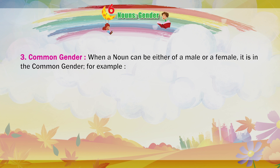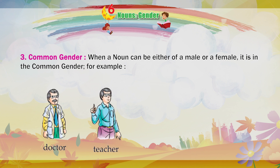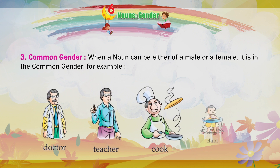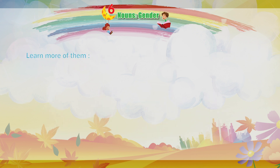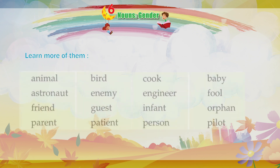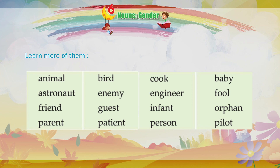Common Gender: When a noun can be either male or female, it is in the common gender. For example: Doctor, Teacher, Cook, Child. Learn more of them: Animal, Astronaut, Friend, Parent, Bird, Enemy, Guest.